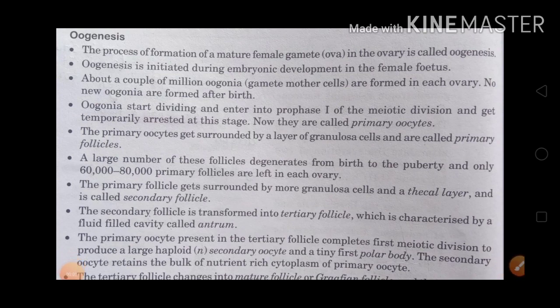Today's topic is oogenesis. The process of formation of a mature female gamete in the ovary is called oogenesis — it means the formation of ova in the ovary. Oogenesis is initiated during embryonic development in the female fetus.